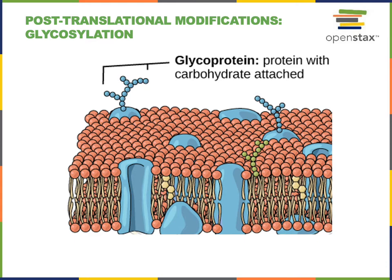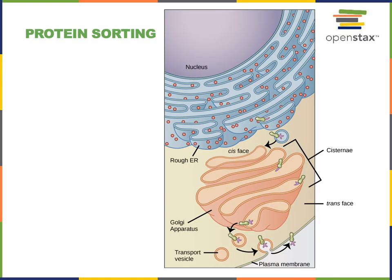Another post-translational modification is the addition of a carbohydrate to a protein, known as glycosylation. These carbohydrate tags make a protein into a glycoprotein. Glycoproteins are often signals on the surface of cells that help the immune system recognize the body's own cells and distinguish them from pathogens. Glycosylation is also an important label added to proteins as they are sorted through the Golgi apparatus, enabling the packaging of multiple proteins into the same transport vesicle.